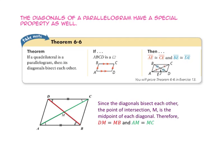In a parallelogram, the diagonals have a special property as well. If a quadrilateral is a parallelogram, then the diagonals bisect each other. Since quadrilateral ABCD is a parallelogram, segment AE is congruent to segment CE and segment BE is congruent to segment DE.